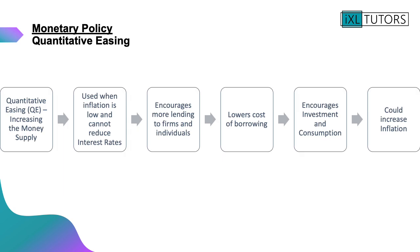Now we're going to move on to quantitative easing. Quantitative easing is used by central banks to increase the supply of money. It is used when inflation is low and they can't reduce interest rates any further. It encourages more lending to firms and individuals and decreases the cost of borrowing. Because there is a greater supply of money in the economy and the cost of borrowing is low, it encourages investment and consumption, which could increase inflation as aggregate demand is increased.